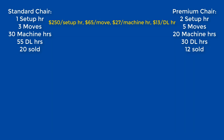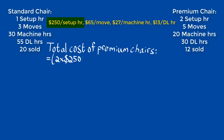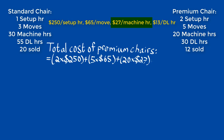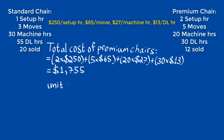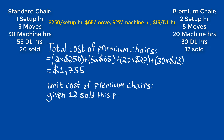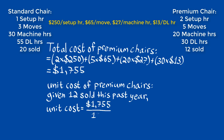We can repeat the same process by applying the activity demands of the premium chairs to determine that the total cost for the premium chairs is $1,755. This provides us with enough information to determine the unit cost for the premium chairs, which, given that 12 were sold this year, is $1,755 over 12, giving us $146.25.